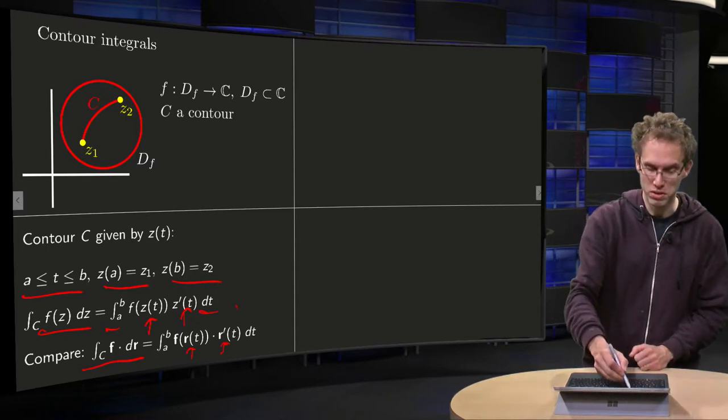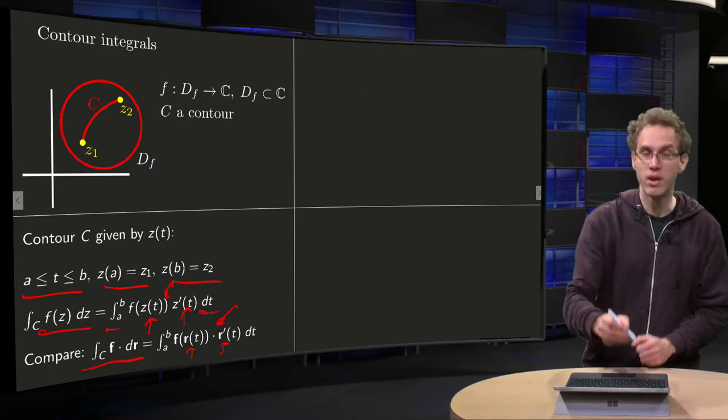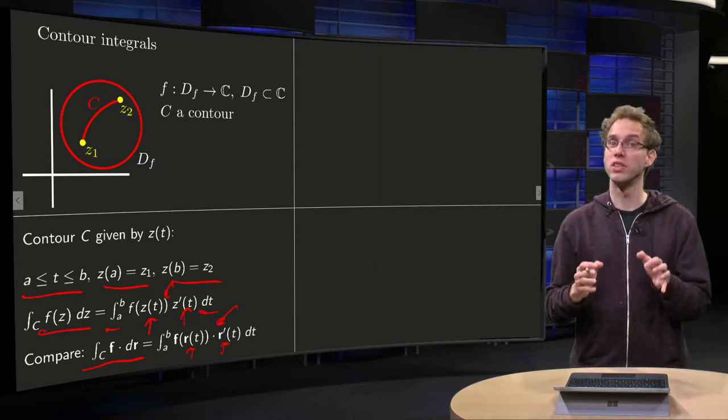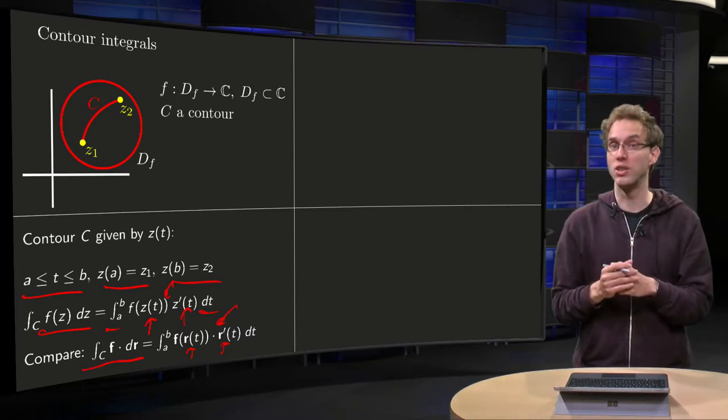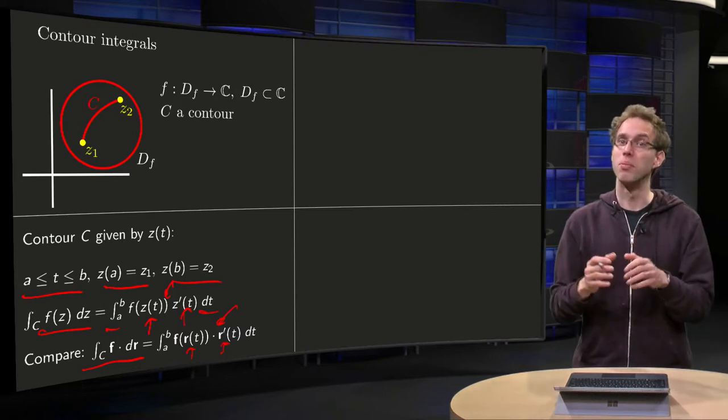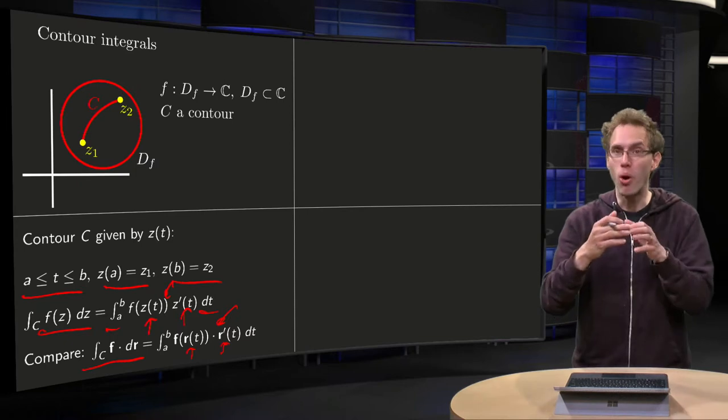So it's very similar, the only difference is here you have a dot product and over here you have a product of two complex numbers. That's what the difference is, which also results in that the interpretation is not as straightforward anymore. But technically you do almost the same, so that's really nice.